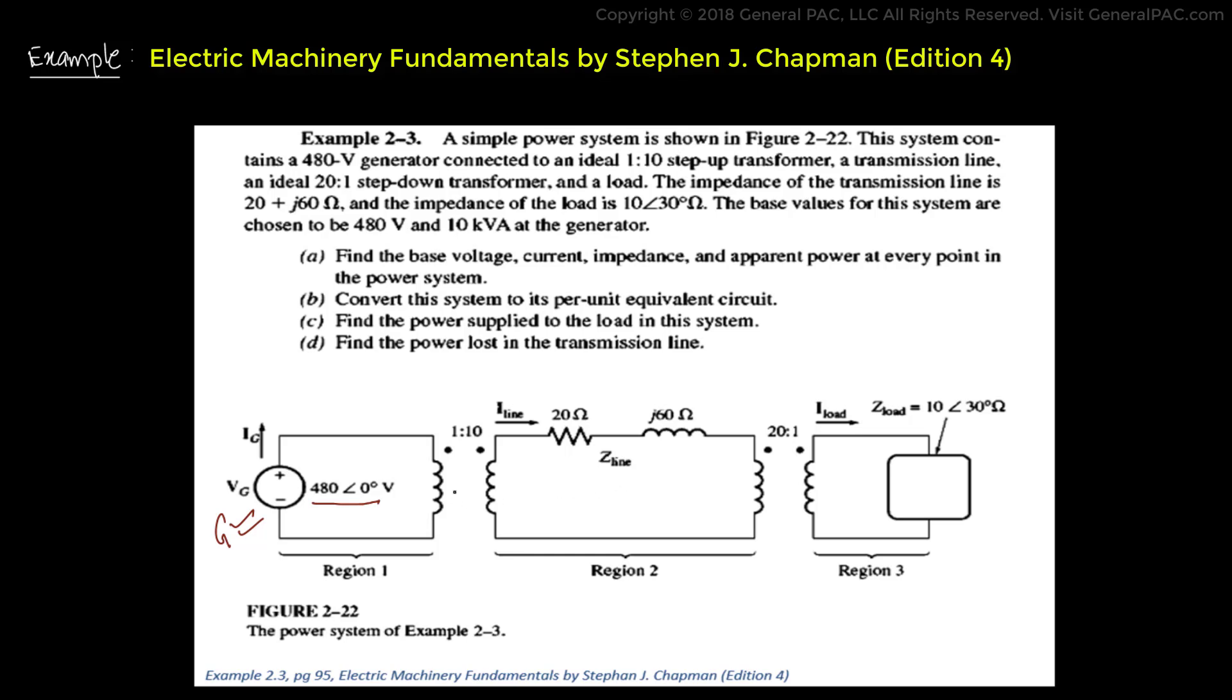And there is a step up transformer in region 2 that has a transmission line with a 20 ohm resistance and 60 ohm reactants. And then there is a step down transformer which leads us to region 3, which has a load of 10 ohms at 30 degrees.